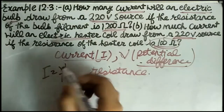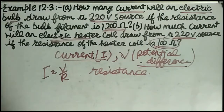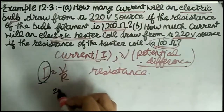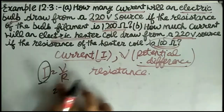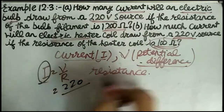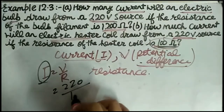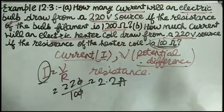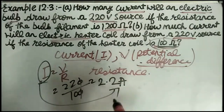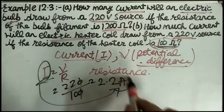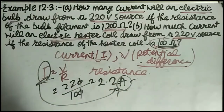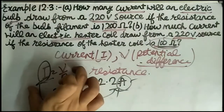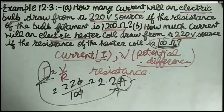Using I = V / R again, we put V = 220 and R = 100. So I = 220 / 100 = 2.2 ampere. This question simply requires knowing Ohm's law: I = V / R.